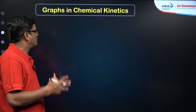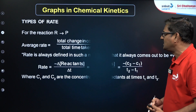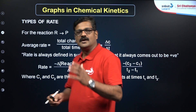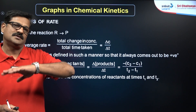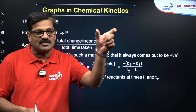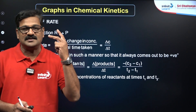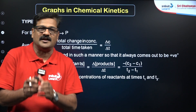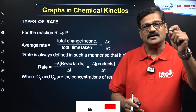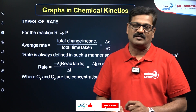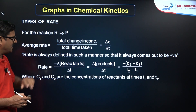Coming to the main course: graphs in chemical kinetics. When you look at chemical kinetics, you have the rate of a reaction. The rate is equal to change in concentration with respect to time. This change calculated over a period or interval of time is called the average rate, and the rate at an instant is called the instantaneous rate. So you have two types of rates.